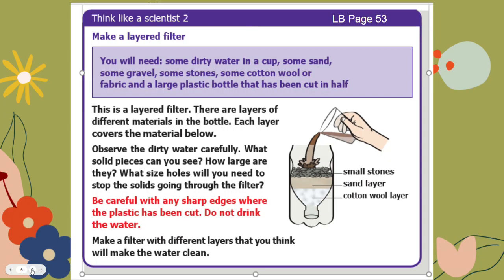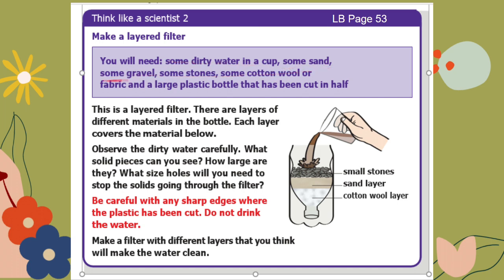In your learner's book, page 53, we are going to make a layered filter. This activity shows you how you can use different layers to make a filter to clean water. We will need some dirty water in a cup, some sand, some gravel, some stones, some cotton wool or fabric, and a large plastic bottle that has been cut in half.